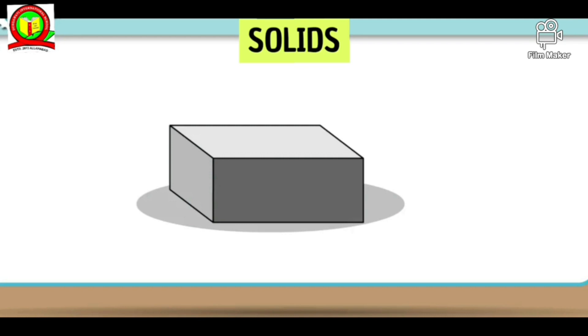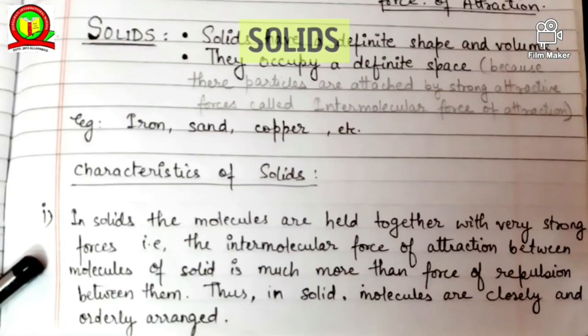Now we will read about the first state of matter, that is solid. Solids have a definite shape and volume — they occupy a definite space. This is because the particles are held together by strong attractive forces called intermolecular force of attraction.